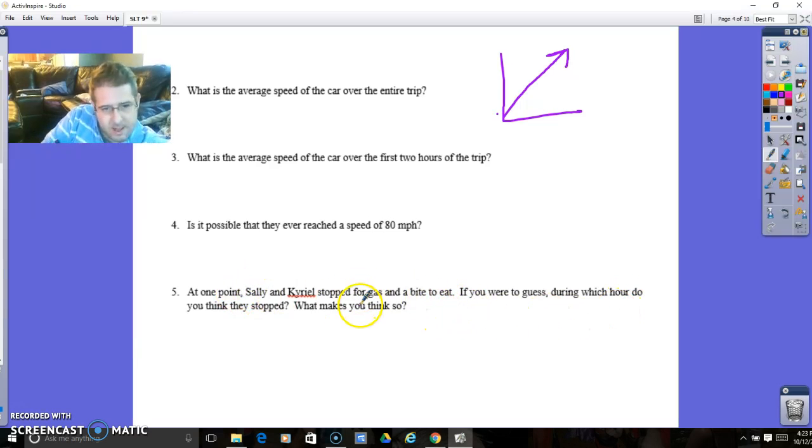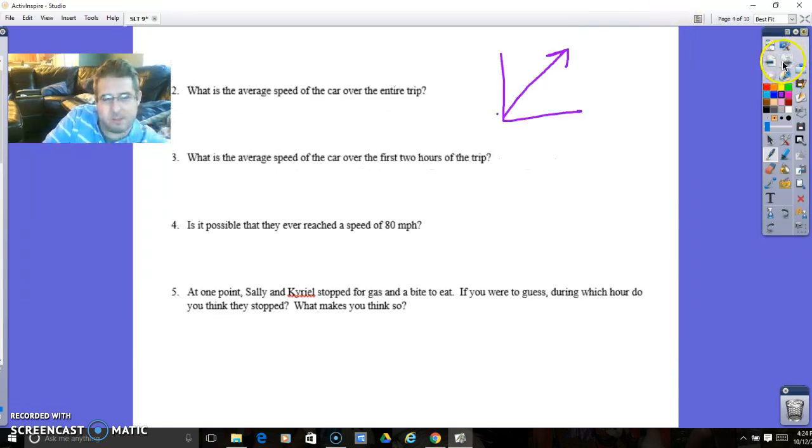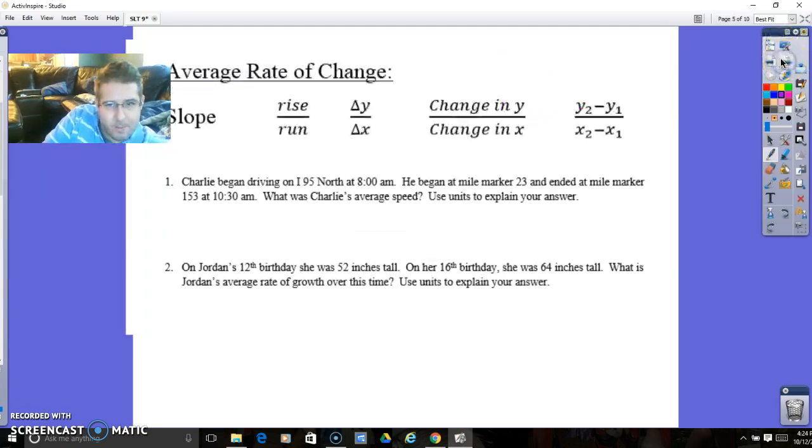At what point do you think Sally and Kyriel stopped for gas? If you had to guess, I would probably guess during the second hour. The reason why is because that was the time they went the least amount of miles in an hour. So it's very likely they were probably stopped during that time. They were probably going faster than 36 miles per hour, but they stopped for a little bit, which means time was passing and they weren't getting anywhere.